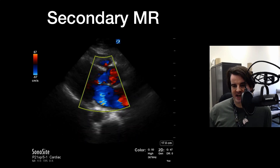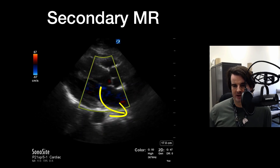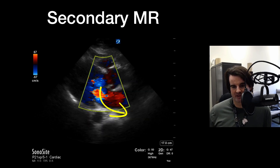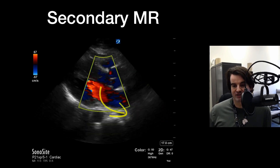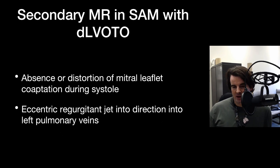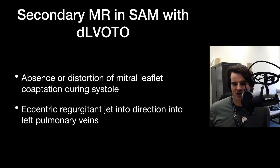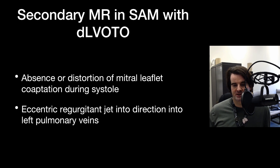On the parasternal long axis, we can see again that posteriorly directed jet, which here is quite generous. This patient actually did have severe MR with their dynamic obstruction. The reason this happens is an absence or distortion of mitral leaflet coaptation during systole — as that apparatus gets pulled away, the valve just can't coapt. This can lead to eccentric regurgitation into the actual left pulmonary veins as well.